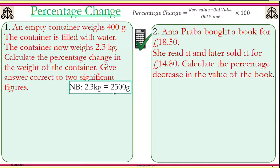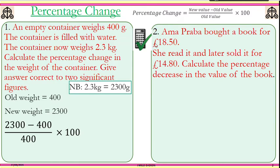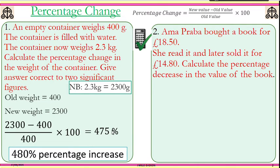So our 2.3 kilograms now becomes 2300 grams. This is the original one, the old one, and this is the new one. Now we put it into the formula: new minus old, all over old, times 100. You are allowed to use a calculator, and we have a positive number, so that shows a percentage increase.